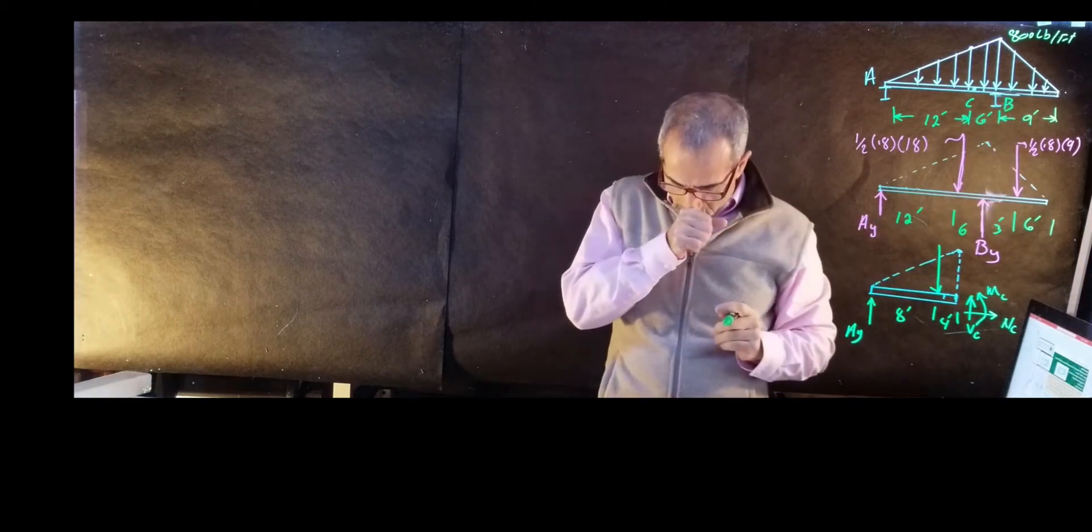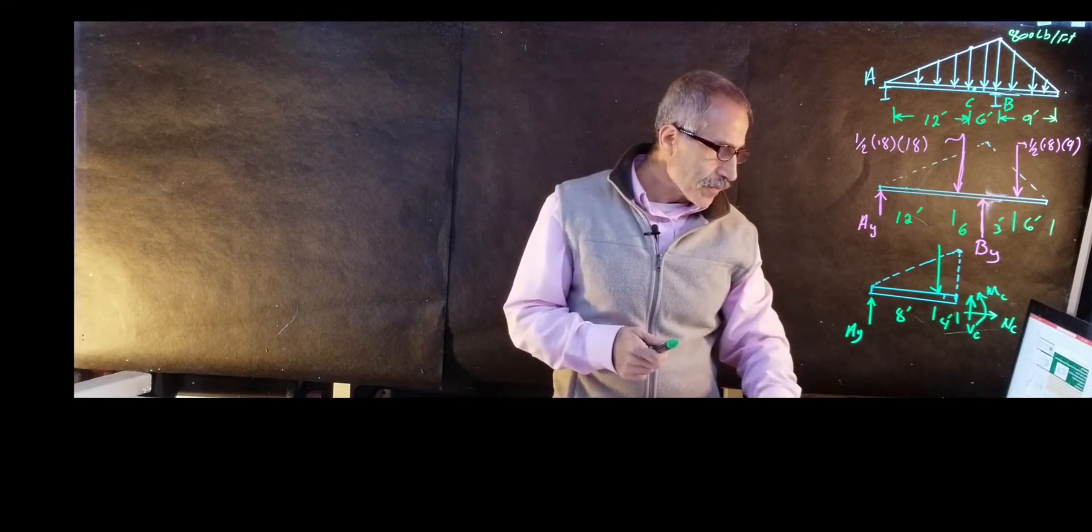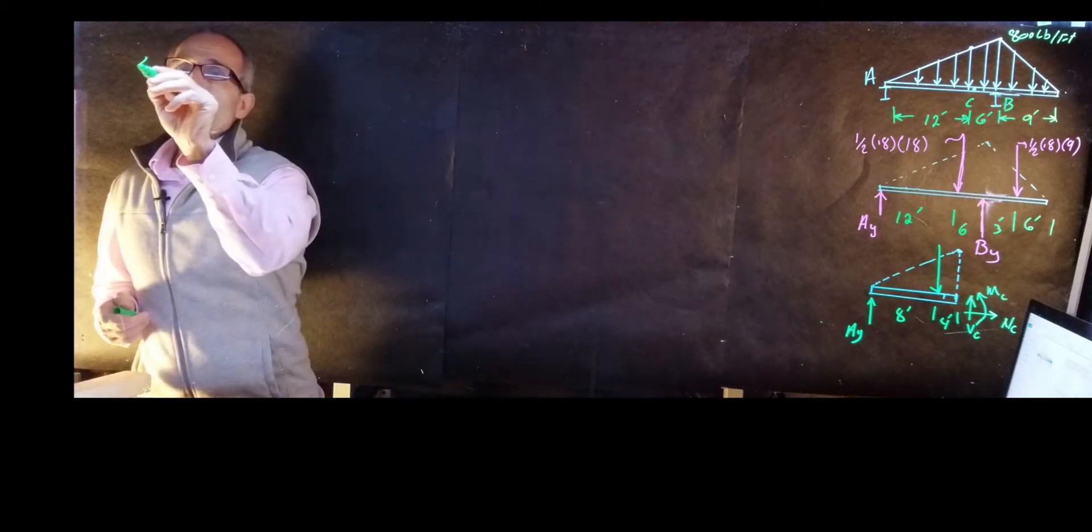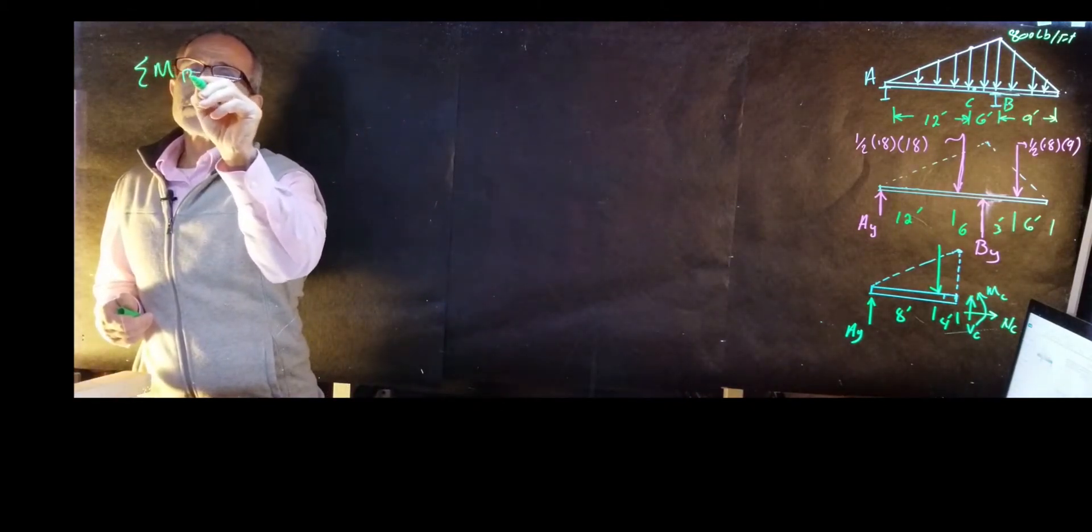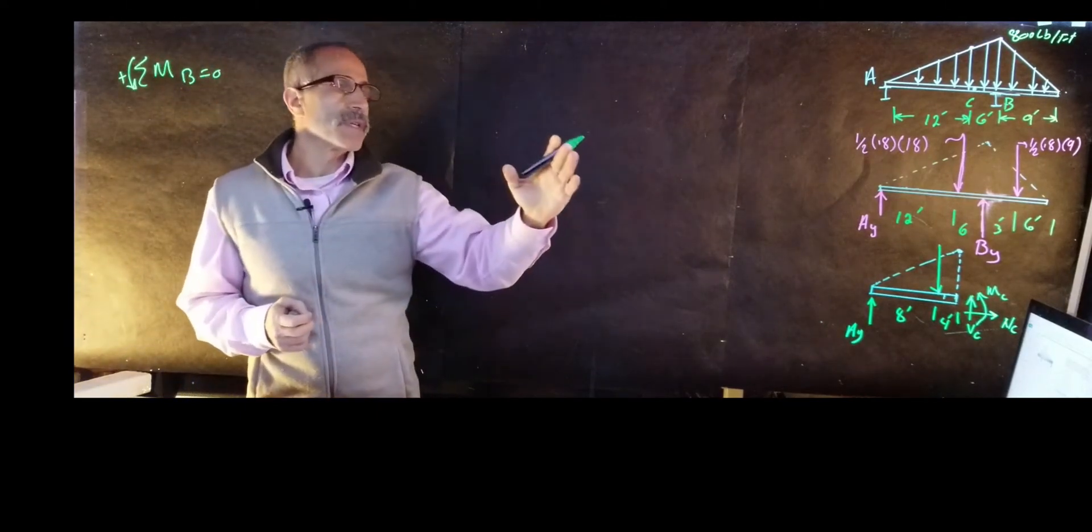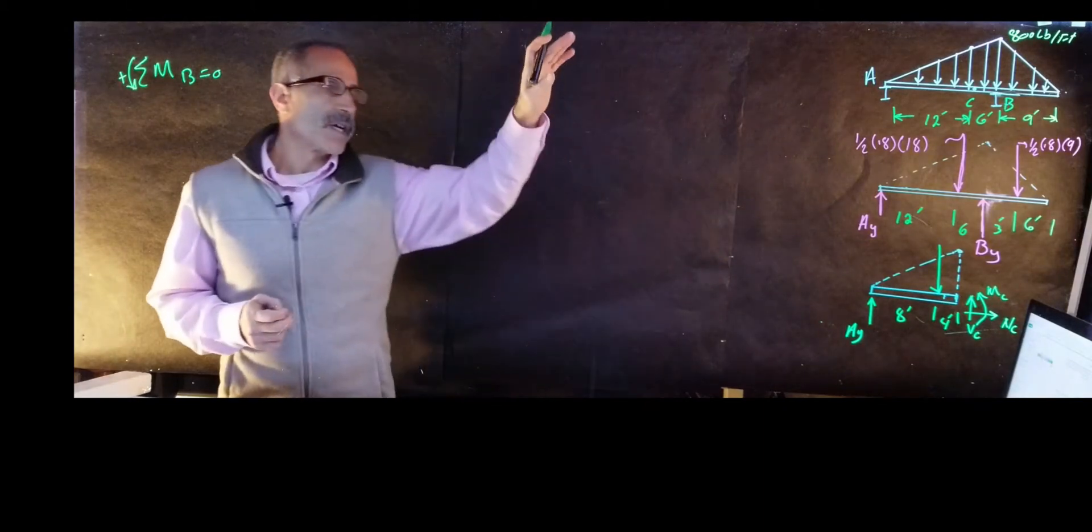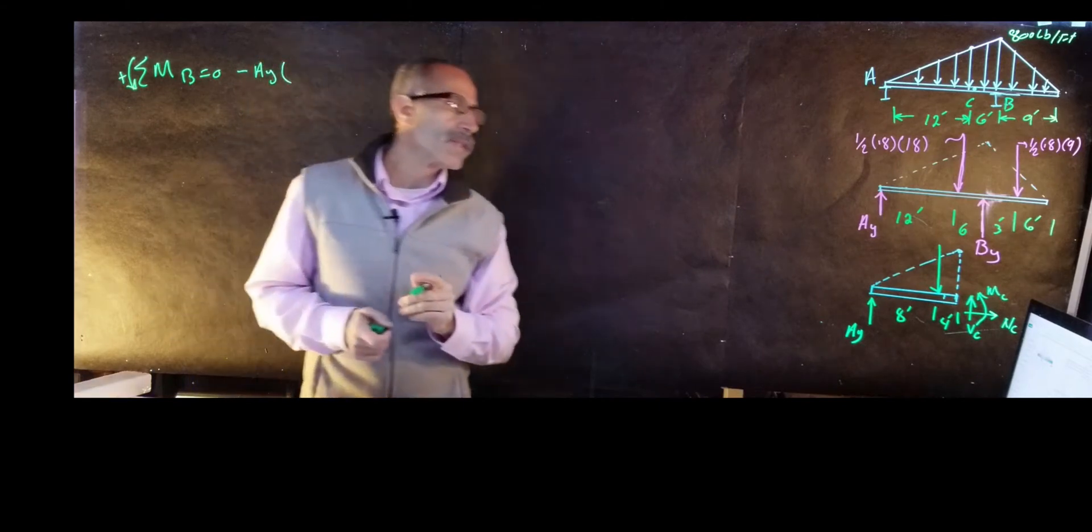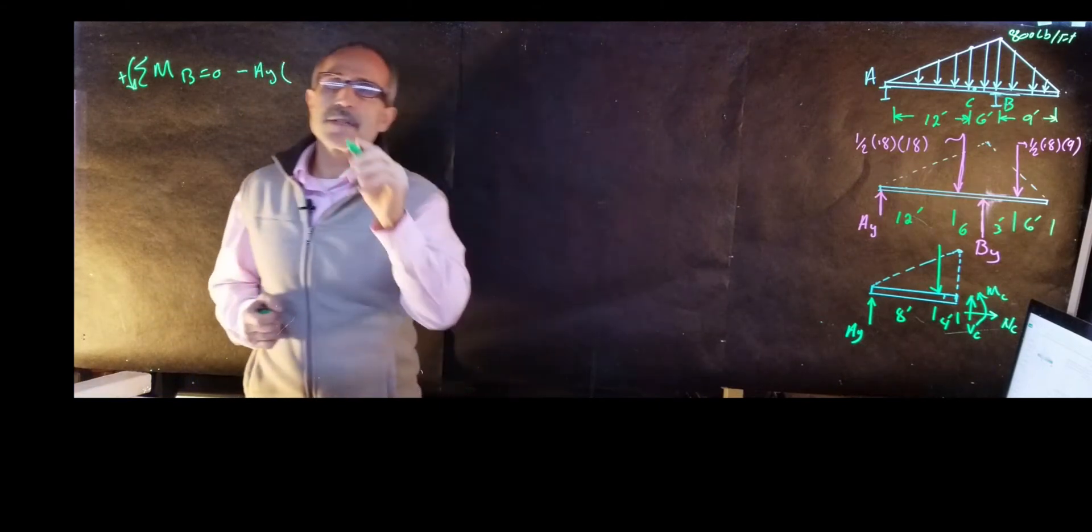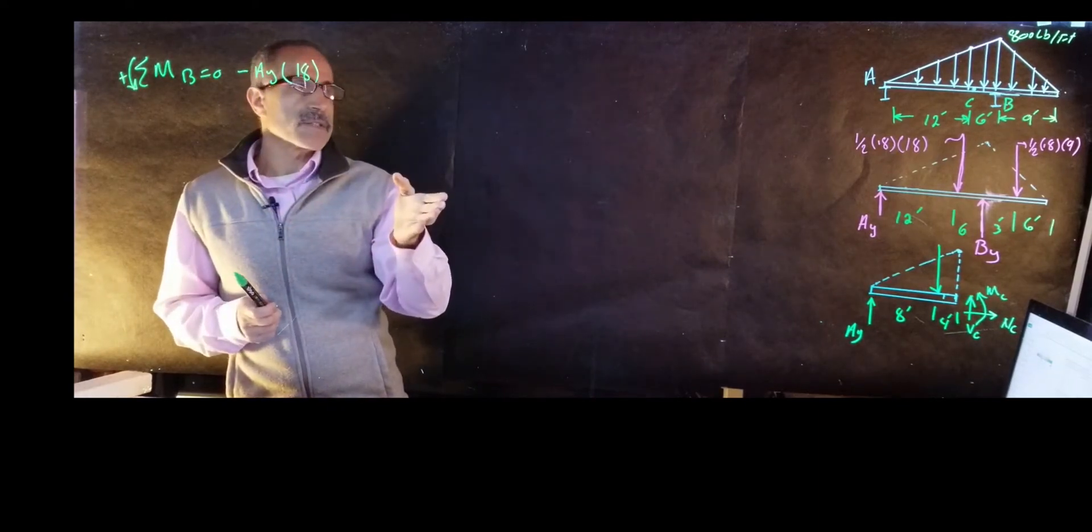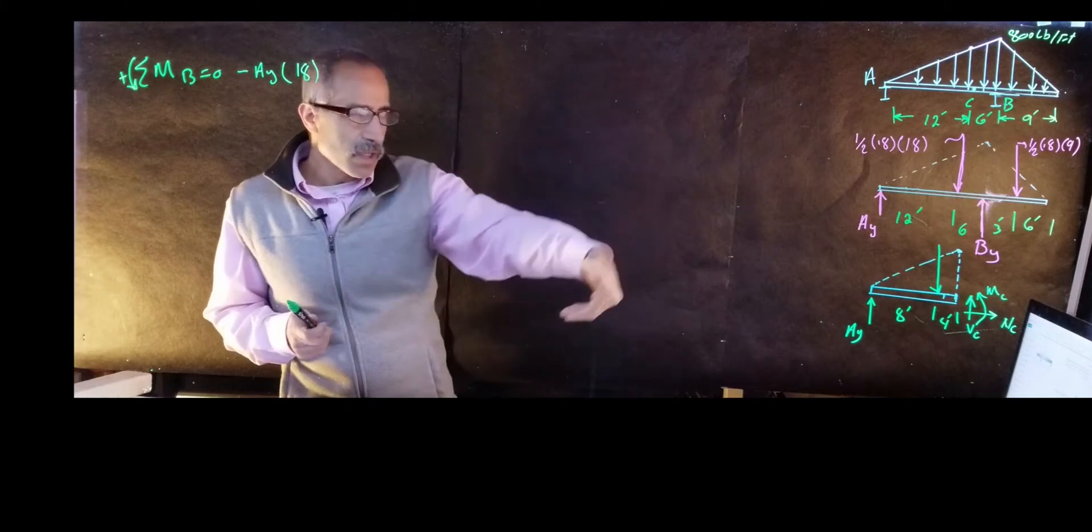Let's take a summation moment about point B. Summation moment about point B is equal to 0, counterclockwise is positive. So I'm going to start from here. It's going to be AY times the distance, minus AY times 18 feet. Why is it negative? Because I'm saying counterclockwise is positive, and my AY is going clockwise.